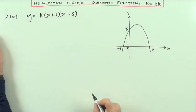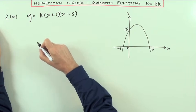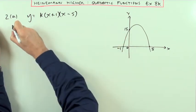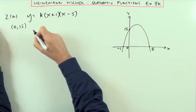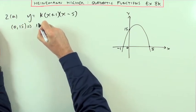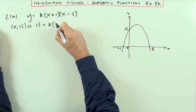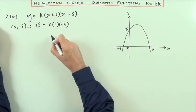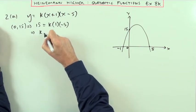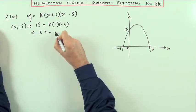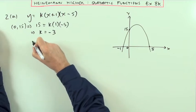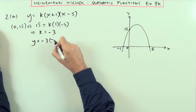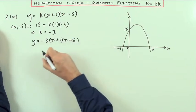There might have been some common factor K taken out to begin with, so I need another piece of information to find K. There's an independent point — I've got the point (0, 15), which means 15 must equal K times, and if X is 0, I'm just left with 1 in that bracket and negative 5 in that bracket. Negative 5K equals 15, so K equals negative 3. The equation is Y equals negative 3 times (X plus 1)(X minus 5).